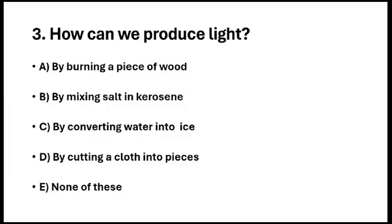Question number 3. How can we produce light? Option A. By burning a piece of wood. Option B. By mixing salt in kerosene. Option C. By converting water into ice. Option D. By cutting a cloth into pieces. Option E. None of these. So the answer is option A.